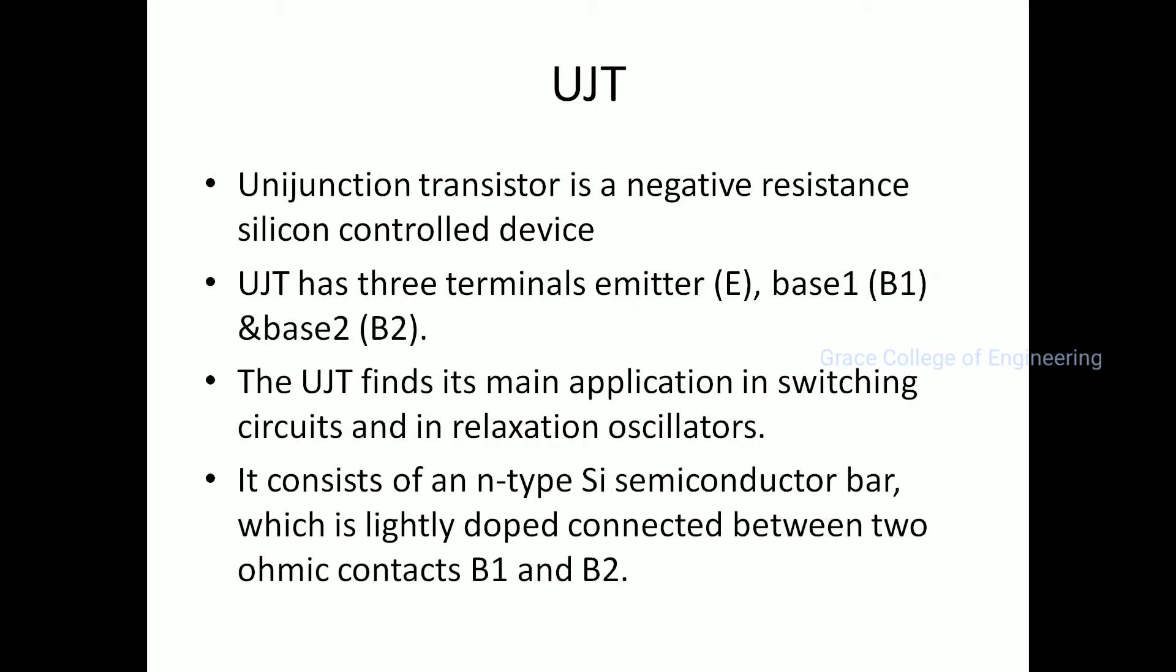UJT, or Unijunction Transistor, is a negative resistance silicon controlled device. It has three terminals: emitter, base 1, and base 2. The UJT finds its main application in switching circuits and relaxation oscillators. It consists of an n-type semiconductor bar which is lightly doped, connected between two ohmic contacts B1 and B2.